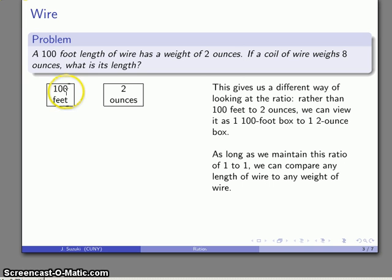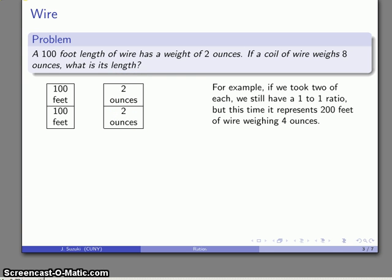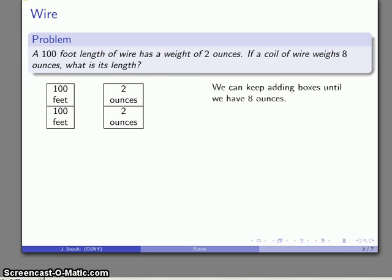Here's the important thing. As long as I maintain this ratio, I can compare any length of wire to any weight of wire. For example, what if I take two of each of these boxes? Now I have two of these boxes to two of these boxes. It's worth noting this is still a one to one ratio, except in this case our one is a bigger thing. Now I still have the one to one ratio, but this time it represents 200 feet and four ounces. I can keep adding boxes until I get my eight ounce weight of wire.